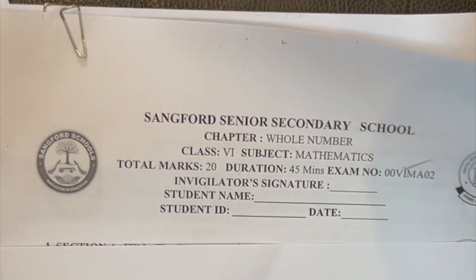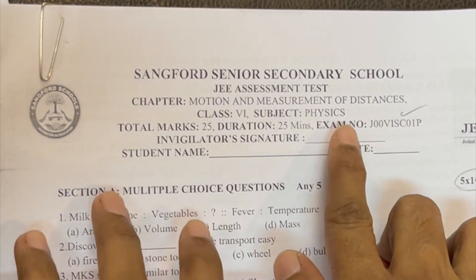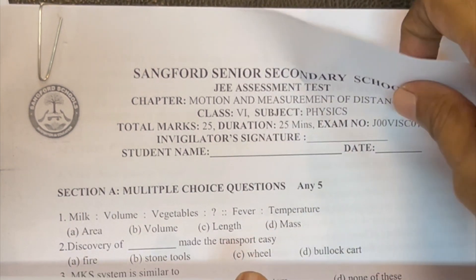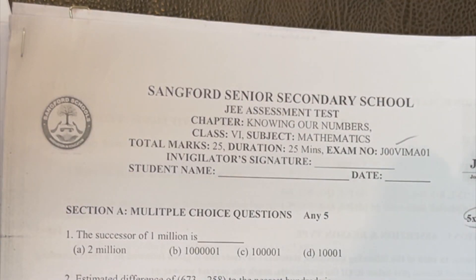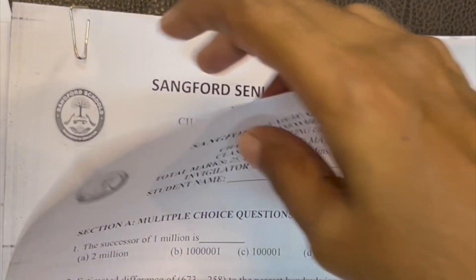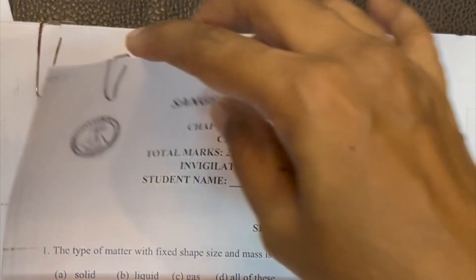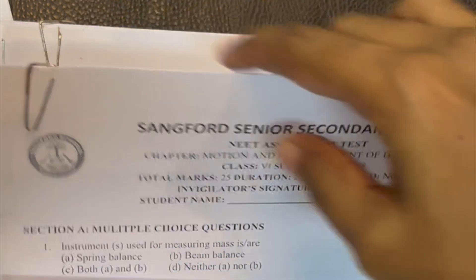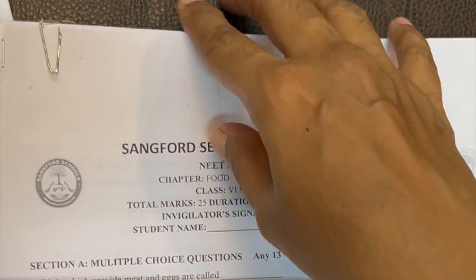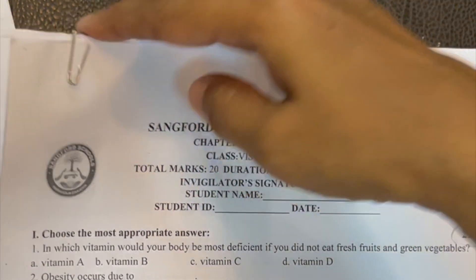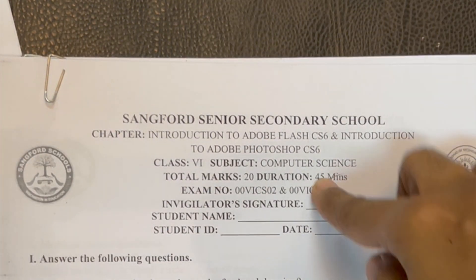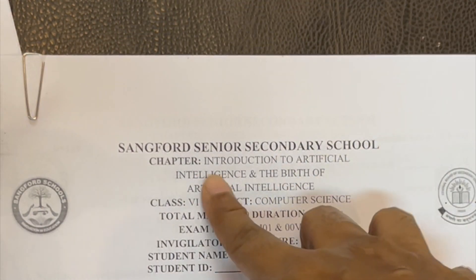Regular Maths is included, along with separate JEE Physics, JEE Chemistry, and JEE Maths components. NEET Chemistry, NEET Physics, and NEET Biology are also covered separately. Regular subjects such as Tamil, English, Science, and Social Science are included, and Computer Science and Artificial Intelligence start from this level as well. This is how all chapter tests and subject coverage is carried out throughout the year. Thank you so much.